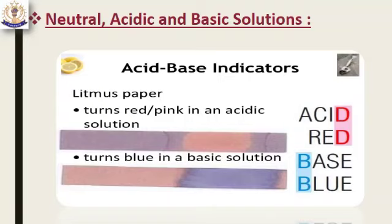Now we will start another term: neutralization reaction. It is defined as a chemical reaction in which an acid and a base react to form salt and water. Here you can see the example — HCl reacts with NaOH and forms salt, NaCl, plus water. When an acid reacts with a base, it forms water and salt. This kind of reaction is called a neutralization reaction.